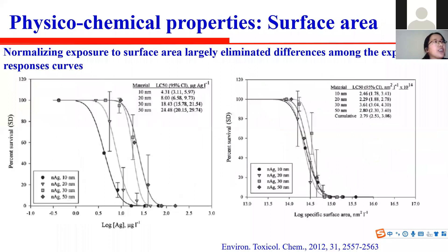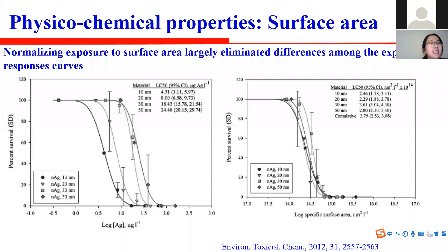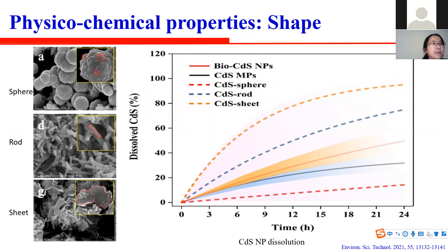Another important factor is surface area. On a mass concentration basis, the toxicity of different nanosilver particles increases with decreasing particle size. However, normalizing exposure to surface area largely eliminates differences between the exposure-response curves. In other words, the toxicity of nanosilver at the same mass concentrations is inherently associated with surface area.